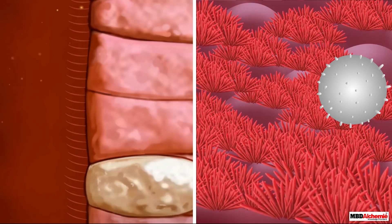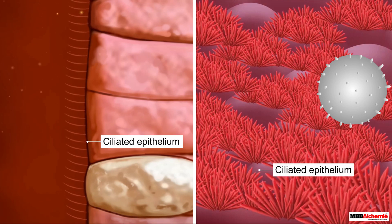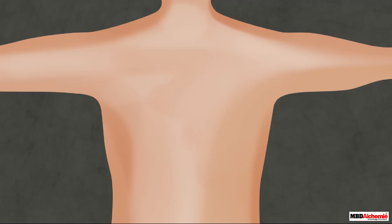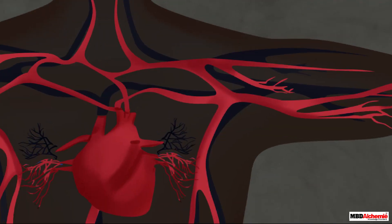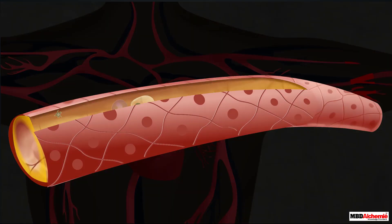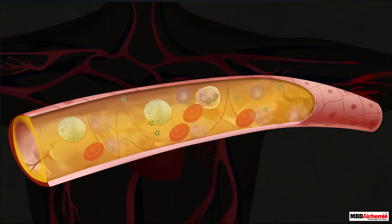This type of movement that occurs due to the cilia of the cells is called the ciliary movement. It occurs in most of our internal tubular organs which are lined by the ciliated epithelium. There are certain cells in the human body that undergo movement to carry out their functions.